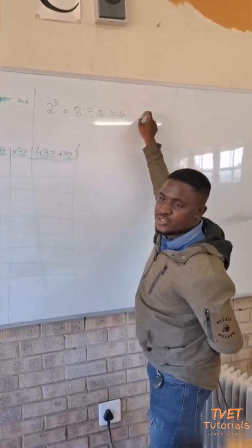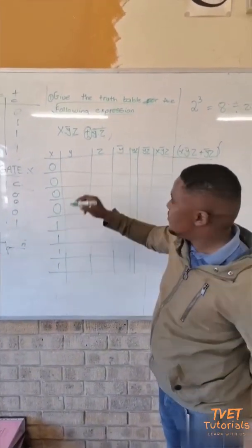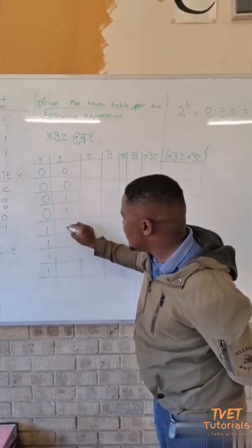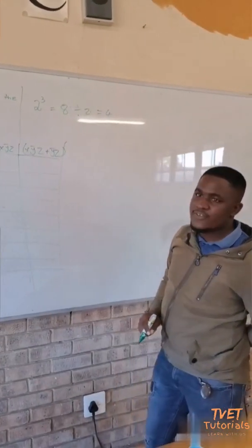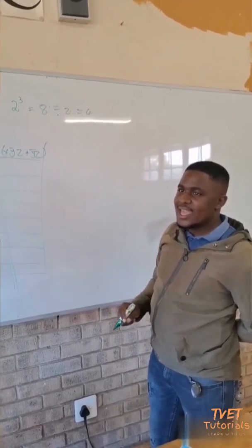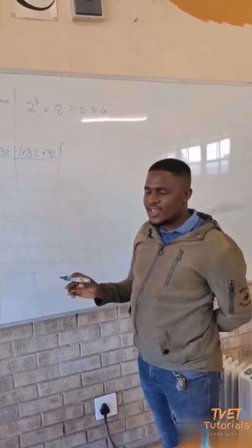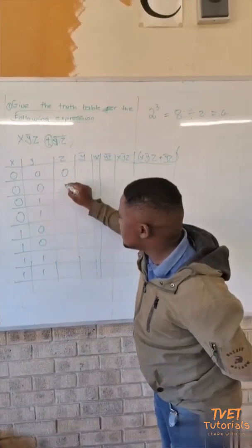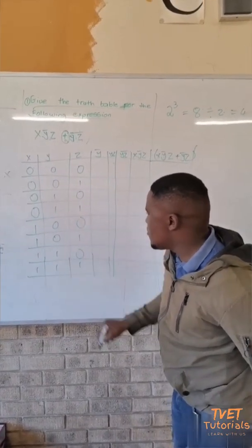When we further divide four by two, we get two. For the Y column we get: zero, zero, one, one, zero, zero, one, one. Then dividing two by two gives one, so for the Z column: zero, one, zero, one, zero, one, zero, one.